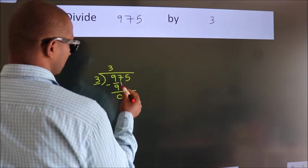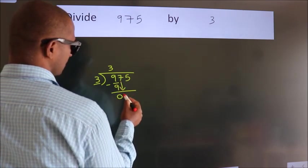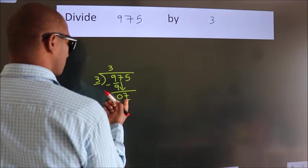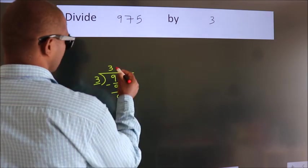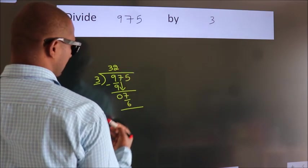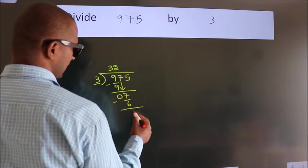After this, bring down the beside number. So 7 down. So 7. A number close to 7 in 3 table is 3 2's 6. Now we subtract. We get 1.